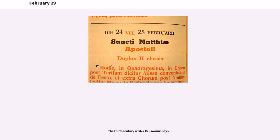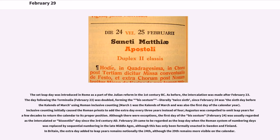The leap day was introduced in Rome as part of the Julian reform in the 1st century BC. As before, the intercalation was made after February 23rd. The day following the Terminalia — February 23rd — was doubled, forming the bis-sextum, literally 'twice 6th,' since February 24th was the 6th day before the calends of March using Roman inclusive counting. Inclusive counting initially caused Roman priests to add the extra day every three years instead of four, and Augustus was compelled to omit leap years for a few decades to return the calendar to its proper position.